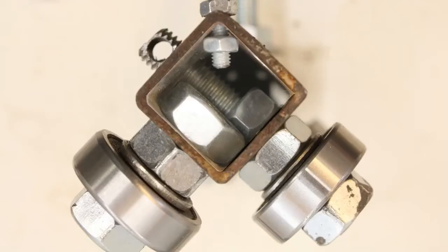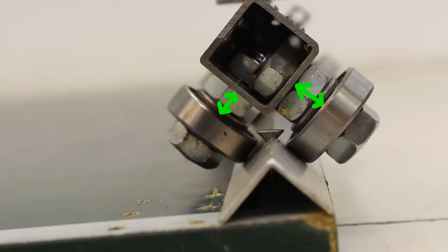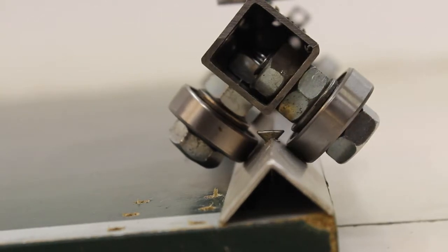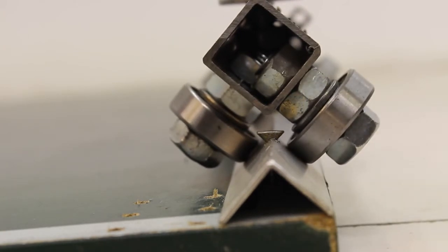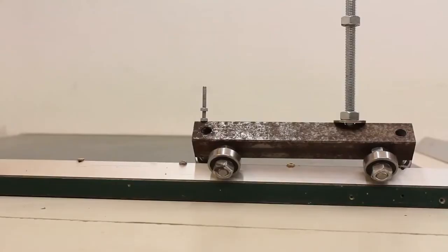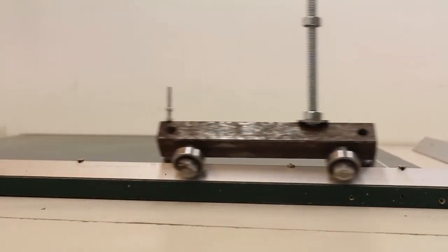After that, you can mount the bolt with the 6mm thread and the ball bearings at the square tube. Note that the space between the square tube and the ball bearings must be large enough so that the bearings don't touch the screws used to mount the linear guide on the base plate. That's the first half of the carriage for the X axis.